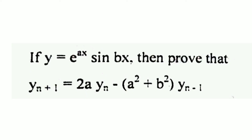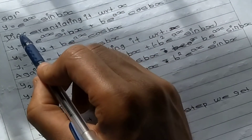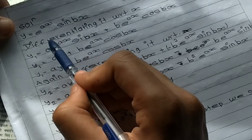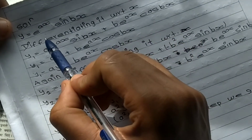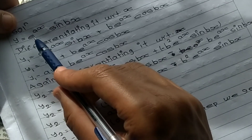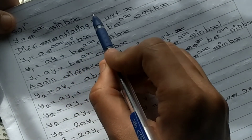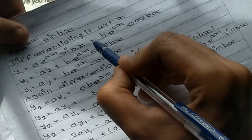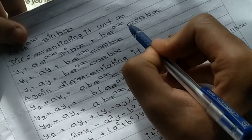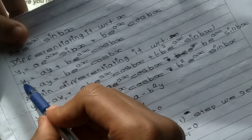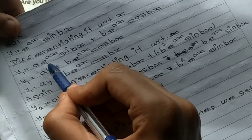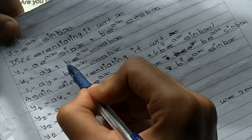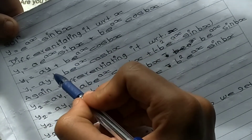y is equal to e to the power ax·sin(bx). Differentiating y, y1 is equal to a... and keeping sin(bx) constant, differentiating e to the power ax·sin(bx): we get b... keeping sin(bx) constant, differentiating e to the power ax gives a·e^(ax)·sin(bx); keeping e to the power ax constant, differentiating sin(bx) gives b, so we get b·e^(ax)·cos(bx). So y1 is equal to a·e^(ax)·sin(bx), which is a·y. Therefore y1 is equal to a·y plus b·e^(ax)·cos(bx).